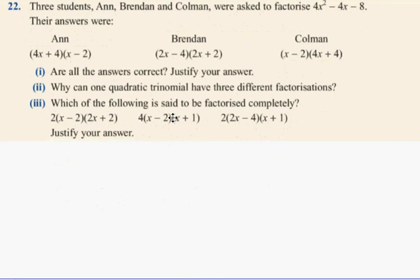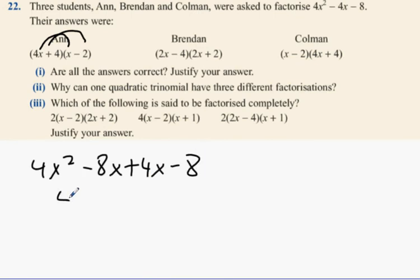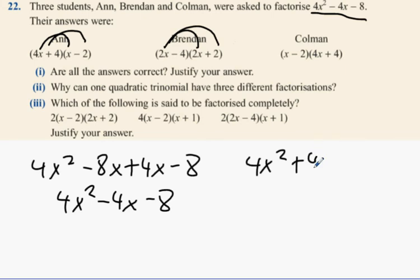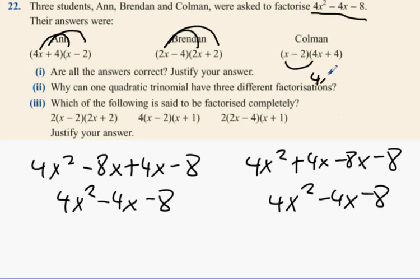Three students, Ann, Brendan and Colman, were asked to factorize 4X squared minus 4X minus 8. Their three answers were this one here, this one here, and this one here. Are all the answers correct? Justify your answer. Well, if we multiply them back out, what happens? You get 4X squared. You're going to get the correct answer when you multiply it out. See the way it's exactly the same? Multiply this one out. 4X squared plus 4X minus 8X minus 8. It's going to be exactly the same answer. And the third one, 4X squared minus 4X minus 8. Is everybody happy that no matter what way I presented it, they all multiplied to give the correct answer? That means they're all correct.